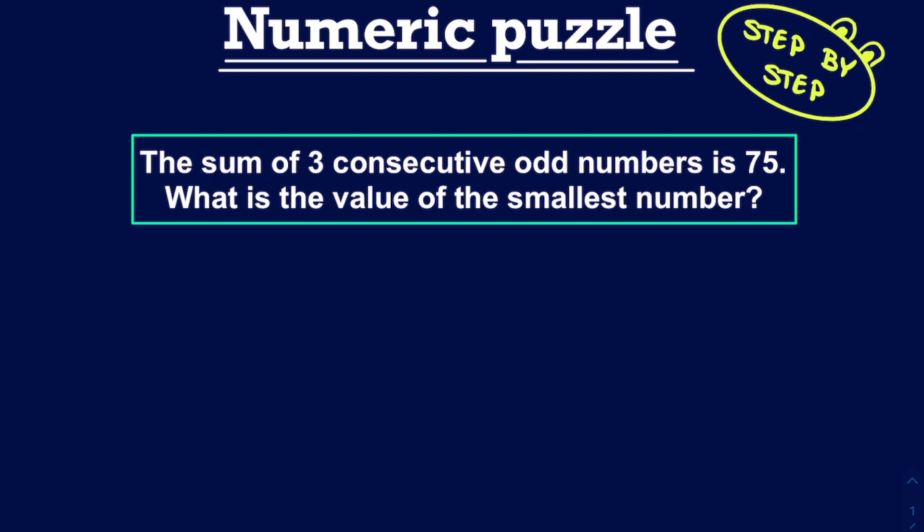So how do we approach such a numeric puzzle? Well, first, we look at the sentence and try to abstract the pieces of information that we are given. In this case, we see that we have a sum, so adding numbers together. We add three numbers together, but not any numbers. Three consecutive odd numbers and adding them together would give us 75.